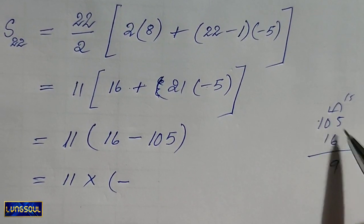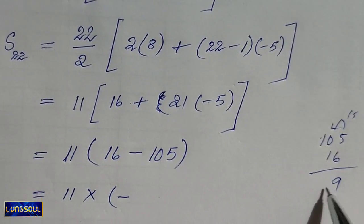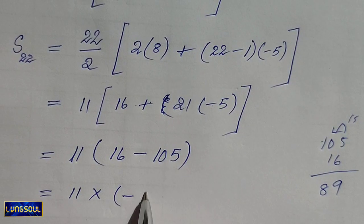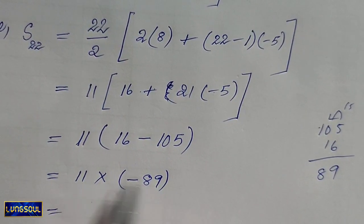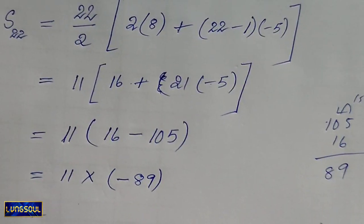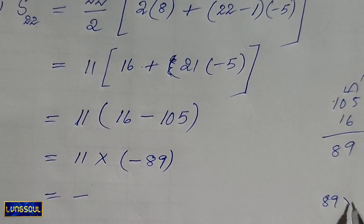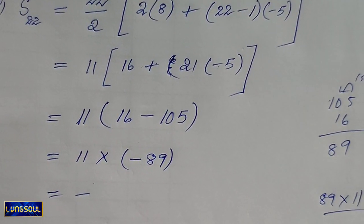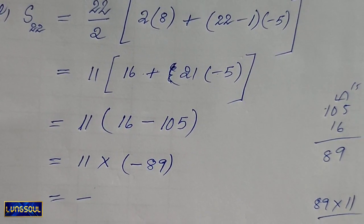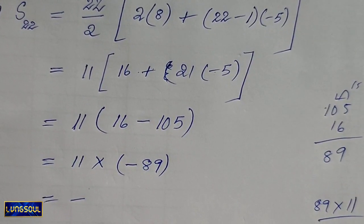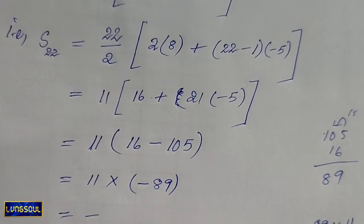Here, we compute: 9 minus 1 equals 8. Then 21 minus 89, and 11 into 89. The answer comes out as minus. So 89 into 11, and 89 into 89 gives 17, 9 — and then minus 9, 79.